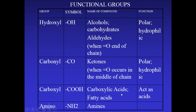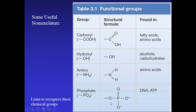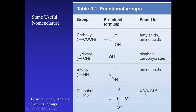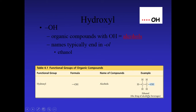The carboxyl group (COOH) acts somewhat like an acid and is part of fatty acids and amino acids. The amino group contains a nitrogen group and is part of amino acids. The hydroxyl group is found in carbohydrates and amino acids or proteins. Finally, the phosphate group is part of our nucleic acids — DNA and ATP.